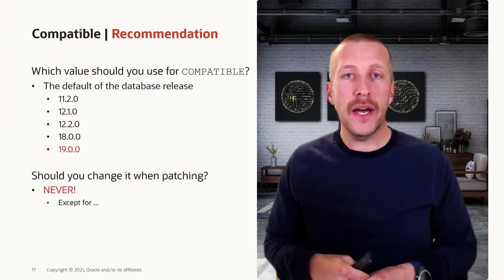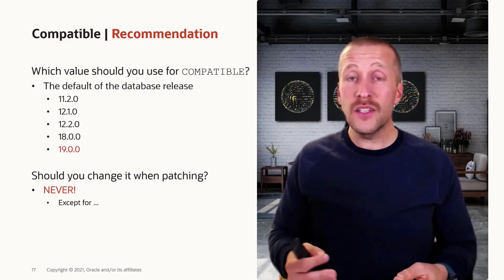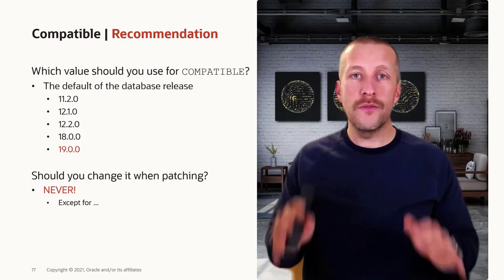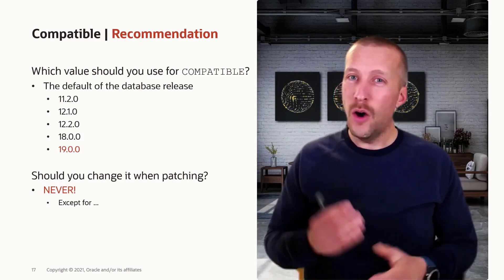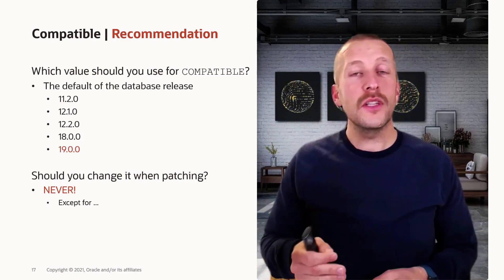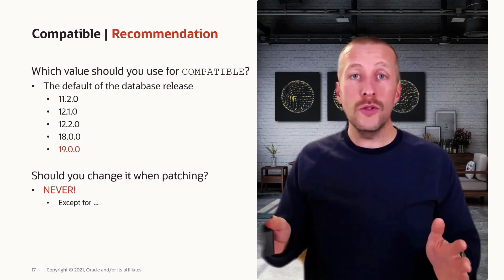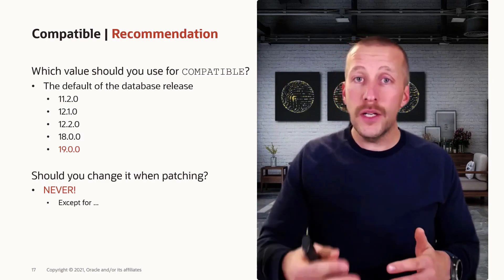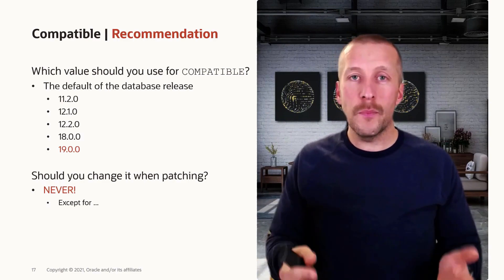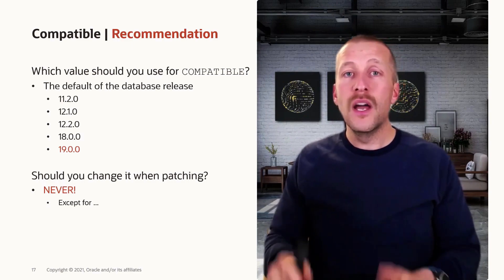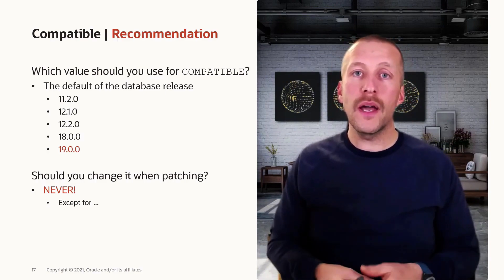When you have decided to change the compatible parameter, to which value should you set it? The answer is very simple: you should always set it to the default of the release you're currently in. So if you're upgrading your database to 19c, you should set the compatible parameter to 19.00. Don't use four digits and don't change it with the release update. So even if you are upgrading to 19.13, you should still set compatible to 19.00. You should never change compatible after a database patch apply, only following an upgrade.